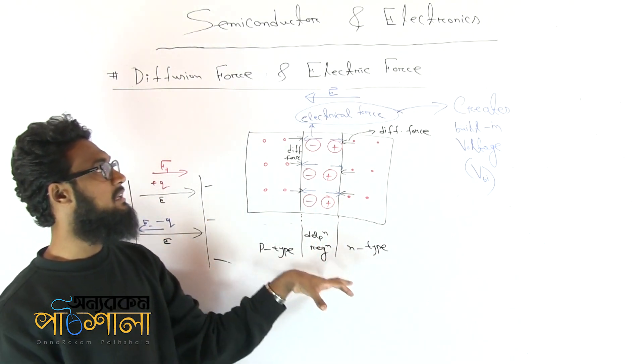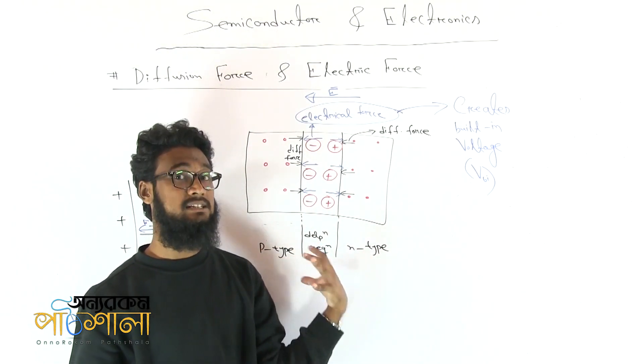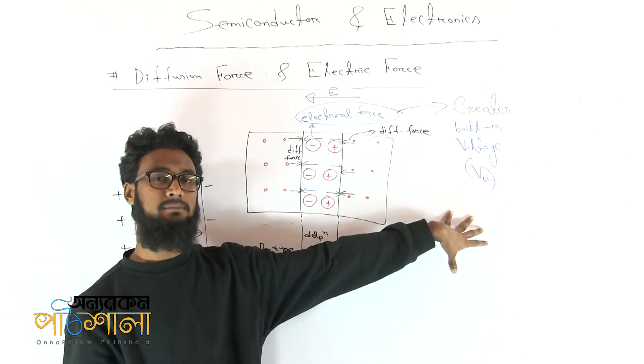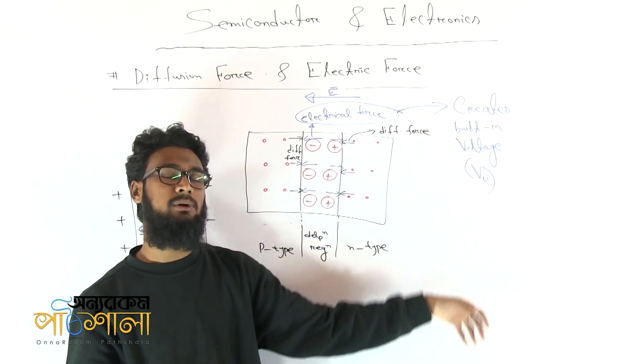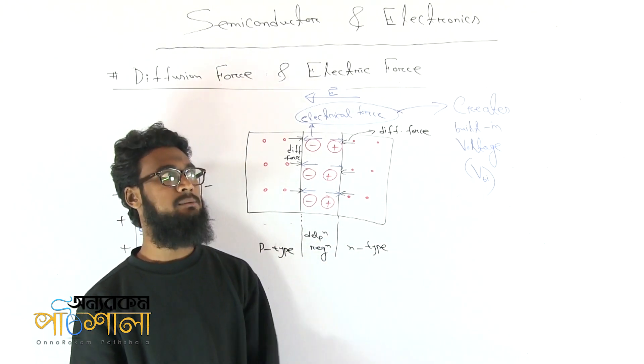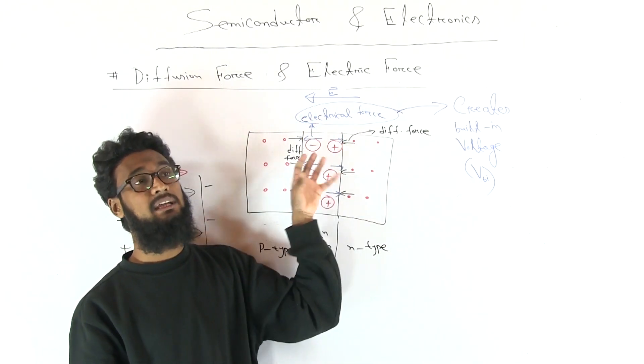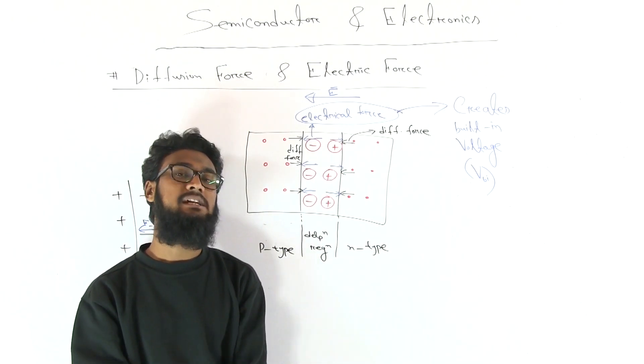This electric field can be used as a built-in voltage, like 0.7V for silicon and 0.3V for germanium. This is mainly to start with this electric field, so this is built-in voltage.